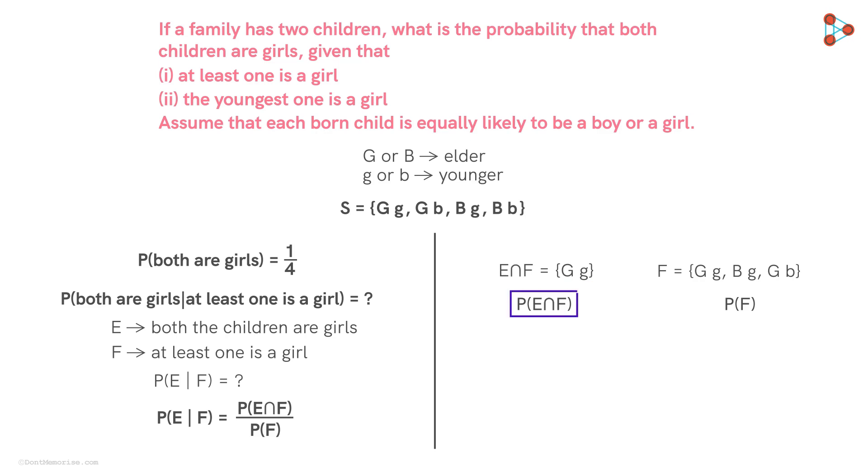P of E intersection F will be the number of possible outcomes of E intersection F by the number of total possible outcomes. This will be equal to 1 by 4. Similarly, P of F will be equal to 3 by 4. Hence, P of E given F will be equal to 1 by 4 by 3 by 4 which is equal to 1 by 3.